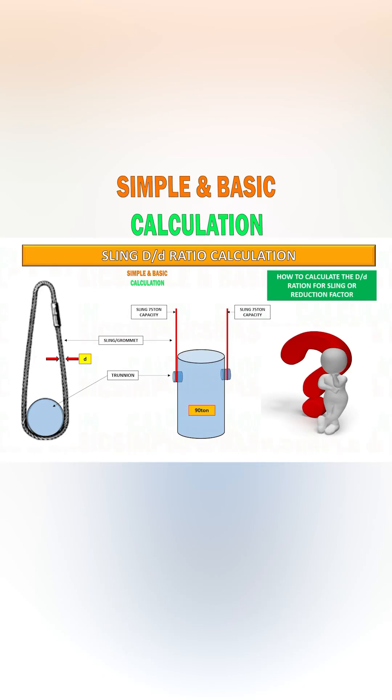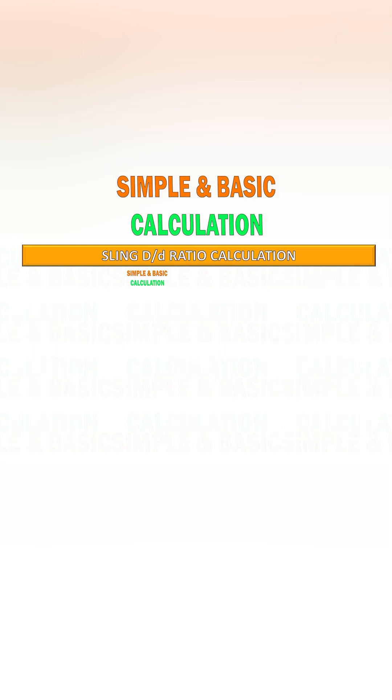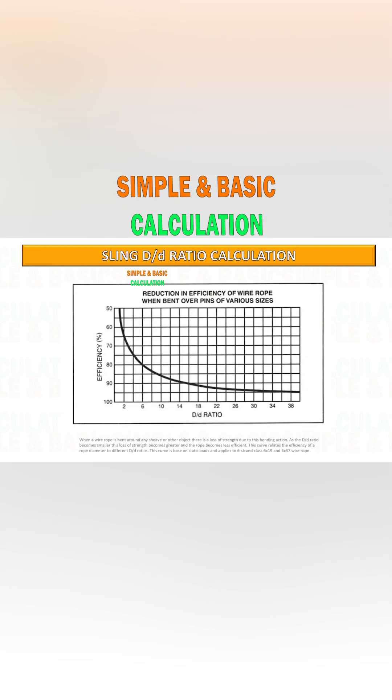Whenever a sling bends around another object, there will always be a loss of sling capacity. This is the chart we will use to determine how much percentage reduction we need to consider based on D/d ratio.